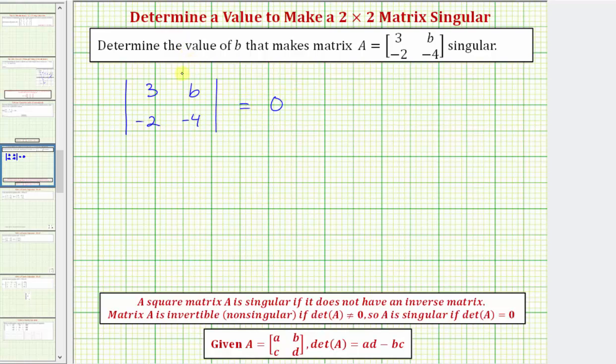Now for a quick review, we have a two by two determinant. The determinant of matrix A is equal to AD minus BC.